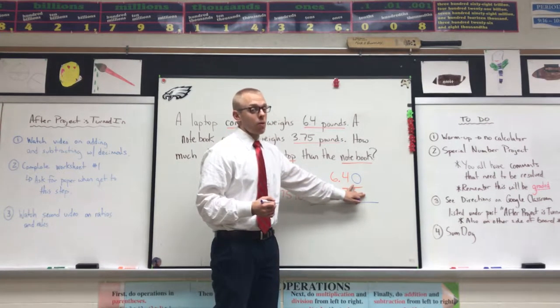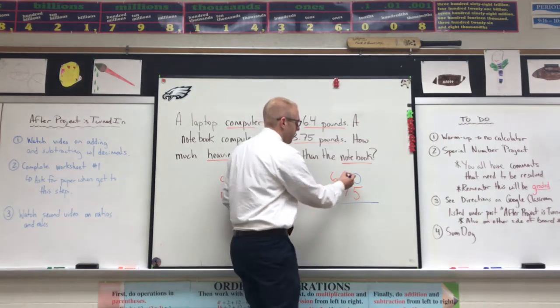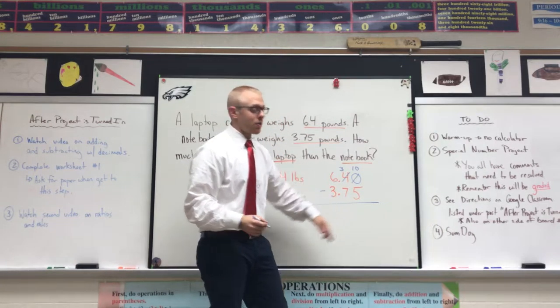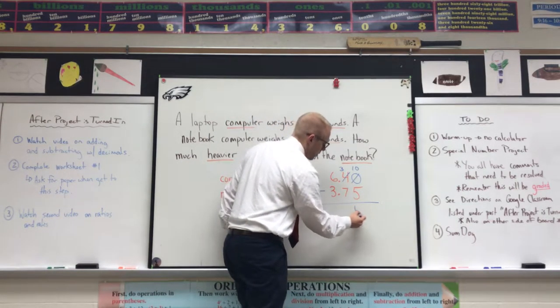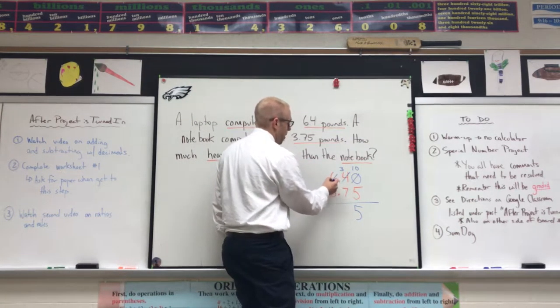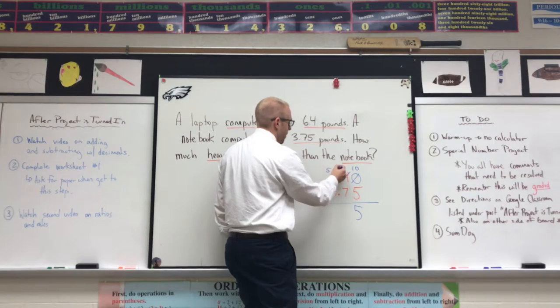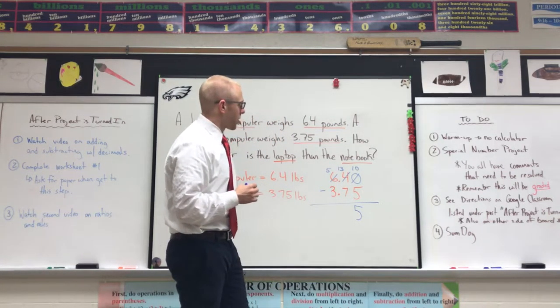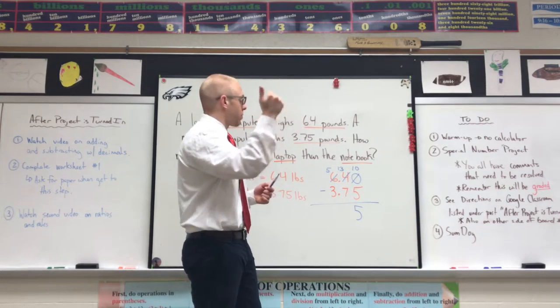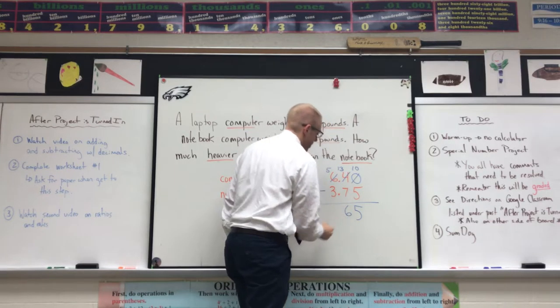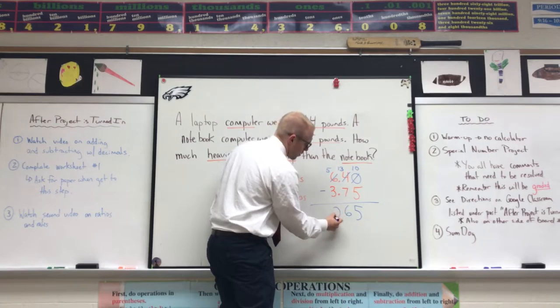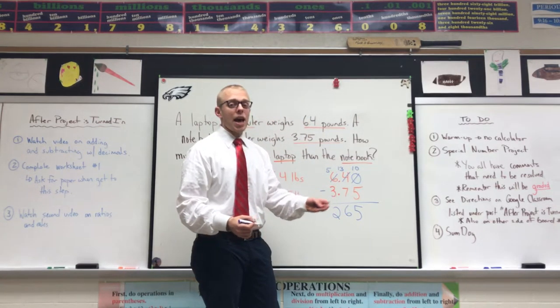My zero becomes a ten. Ten minus five is five. Three minus seven—I have to borrow again. I'm gonna borrow from my neighbor. My six becomes a five, and my three becomes a thirteen. Thirteen minus seven—even if you have to count up: eight, nine, ten, eleven, twelve, thirteen to get to six, you can do that, whatever strategy you need. Five minus three is two, and then that decimal point, just like the cap, just like the penny, I'm gonna drop it straight down to make sure my place value stays where it needs to be.